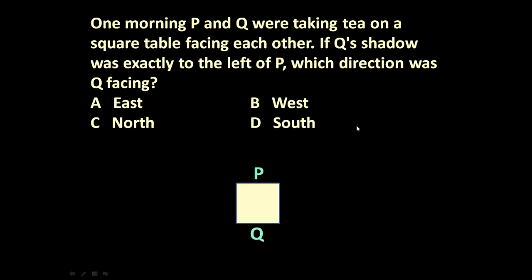Now, Q's shadow, shadow of Q was exactly to the left of P. If we see P, P is facing towards the table. This is the right side of P and this is the left side of P. Q's shadow was left of P.